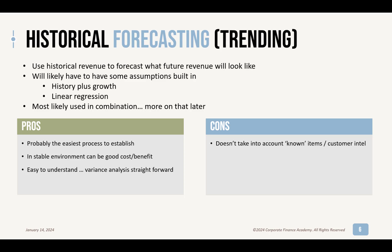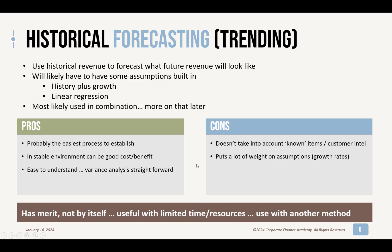The cons: it does not take into account known items or customer intel. If you just did a plain historical trending without talking to your sales team and they know there's a massive order coming in or a customer you lost, it's not going to take that into account. It puts a lot of weight on assumptions if you're using them — like growth rates: how do you know you're going to grow 5%? My two cents is that this has merit, but not by itself. Use it in combination with something else. It can be useful with limited time and resources, but often use it with another method.